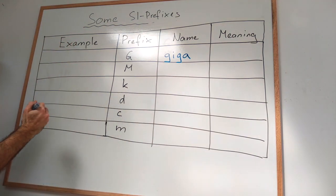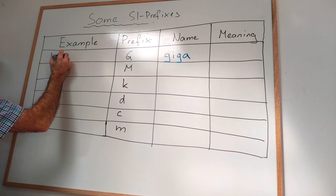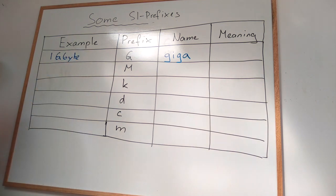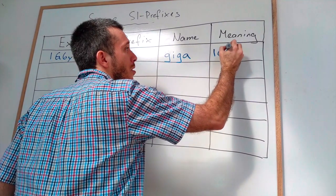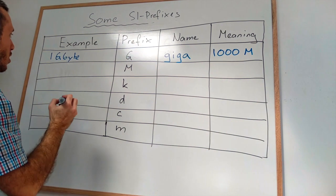You probably have heard this as one gigabyte, or one GB. Now, what is the meaning of this? Well, one gigabyte is equal to 1000 megabytes, which is going to be the next one.